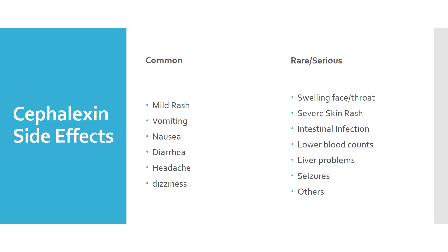Sometimes you can get a really severe skin rash that would require medical attention. Antibiotics can sometimes cause intestinal infections called C. diff, which can require other antibiotics to treat. Cephalexin can also affect certain blood counts — the doctor can check labs for those — and sometimes it can cause issues with the liver, which can also be checked with labs.